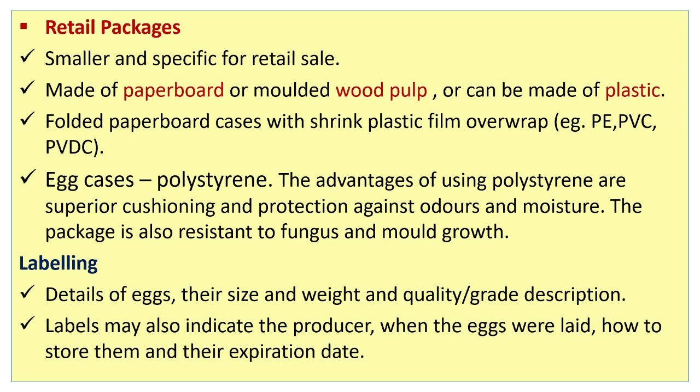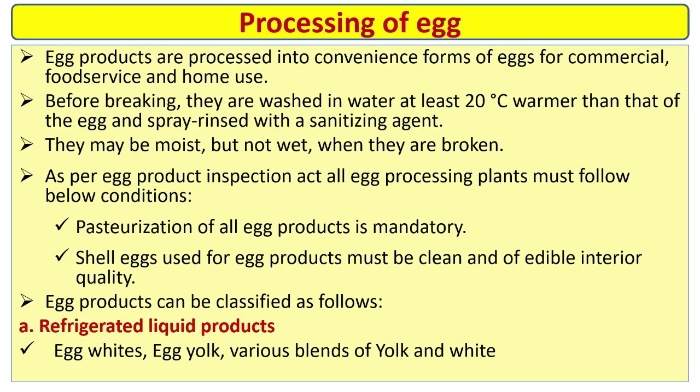Labeling details include size and weight, quality grade, and description. Labels may also indicate the producer, when the eggs were laid, how to store them, and their expiration date.